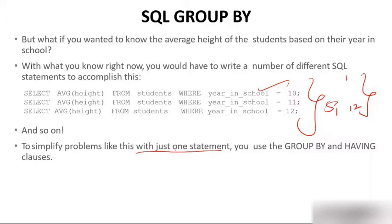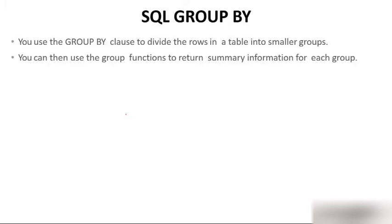To simplify the problem, with just one statement using GROUP BY and HAVING you can do this. See the beauty of GROUP BY and HAVING — without it I was using 12 different commands for 12 different classes, but with just GROUP BY we use only one query. We use GROUP BY class to divide the rows in the table into smaller groups.